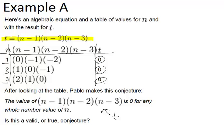The question we have is: is this a valid or true conjecture? So if it's true, it means that it would be true for any number that you plug in for n. So you can plug in 100 and the answer should still be zero for t. So let's just test it out.